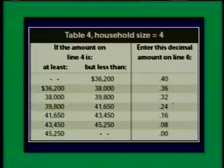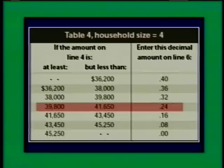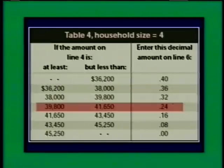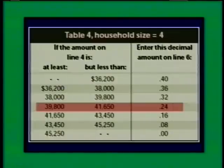The table has an 'at least' and 'but less than' column referencing dollar amounts. $40,000 falls in the row for income at least $39,800 and less than $41,650. The second column says 'enter this decimal amount on line 6.' The relevant value is 0.24 — the decimal representation of 24%. This tells us the family could write off 24% of their childcare costs from their tax bill.